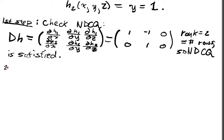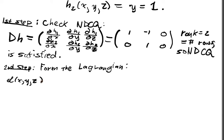So now the second step is form the Lagrangian. Well, we've got L of x, y, z, and we're going to have two constraints, or two Lagrangian multipliers, mu1, mu2. So it's a function of x, y, z, mu1, mu2, is equal to,